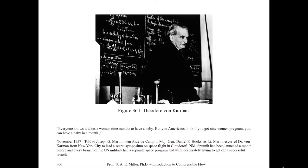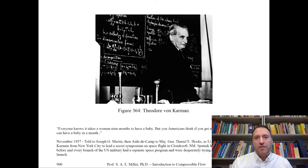He said this to Joseph Martin, who was an aide to General Daniel Hooks, as Martin escorted Dr. von Kármán from New York City to lead a secret symposium on space flight in Crawford, New Mexico. The Soviet Union had just launched Sputnik a month before, and every branch of the U.S. military had a separate space program, desperately trying to get off a successful launch. Dr. von Kármán often taught the method of characteristics, and we'll show other quotes from him in relation to it.